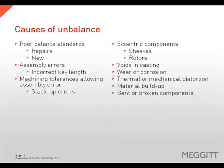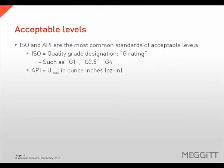There are many causes of unbalance, including poor balancing standards for repairs or new equipment, assembly errors such as the wrong shaft key length, machining tolerances stack-up error, eccentric components, wear or corrosion, and material buildup. To determine acceptable levels of unbalance, two standards are commonly used: the ISO and API standard. ISO assigns a G rating based on the amount of residual imbalance, while the API standard designates the remaining unbalance as UMAX expressed in ounce inches.